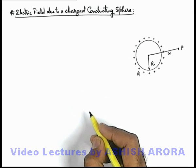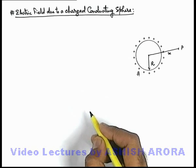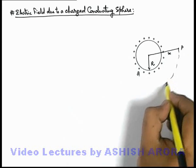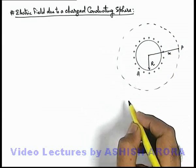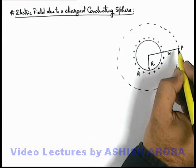for use of Gauss's law we need to first consider a Gaussian surface. So here we consider a spherical surface in the surrounding of this conducting sphere which is passing through point P because